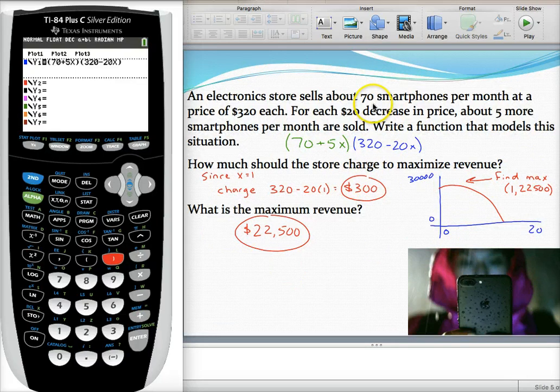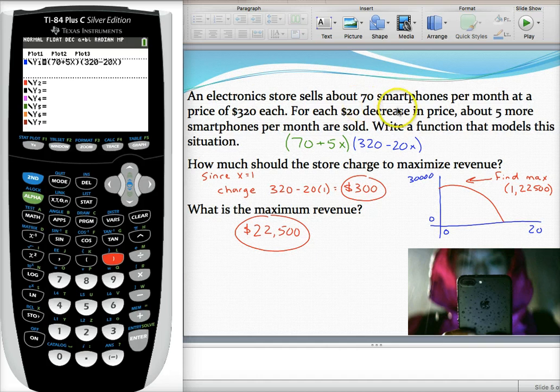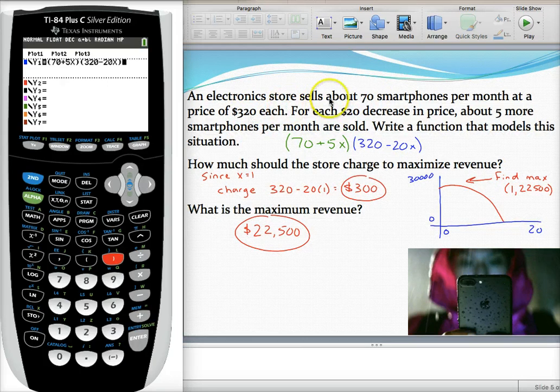Recall that with these problems, you'll usually be given the current sales of a business. So right now, we're selling 70 smartphones when we charge $320. And we're going to change that either by increasing or decreasing the price, which will then also increase or decrease how many we sell, giving us this parabolic shape which we should be able to maximize.